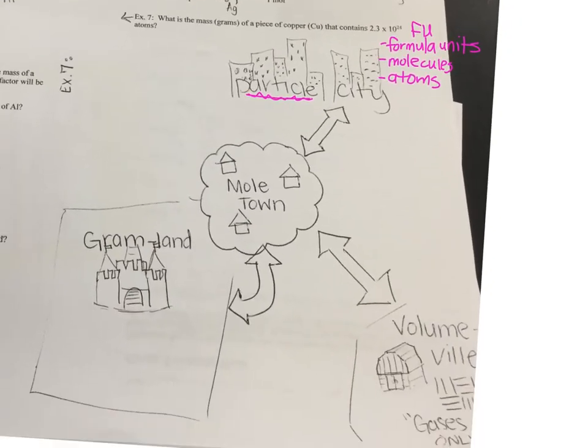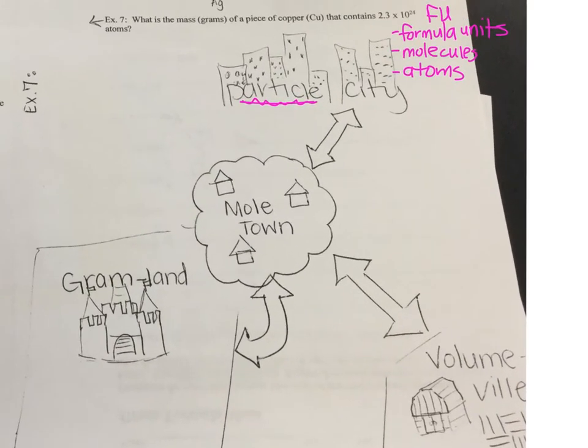Now, taking a step back from the map real quick, you notice that Moletown is in the center, yes? And then how many different areas are there around it? Three. How many different roads are there? Three. There's only three. Meaning you can't travel from Gram Land to Particle City. You have to go through Moletown. So you are limited to where you can travel. You always have to convert to a mole.